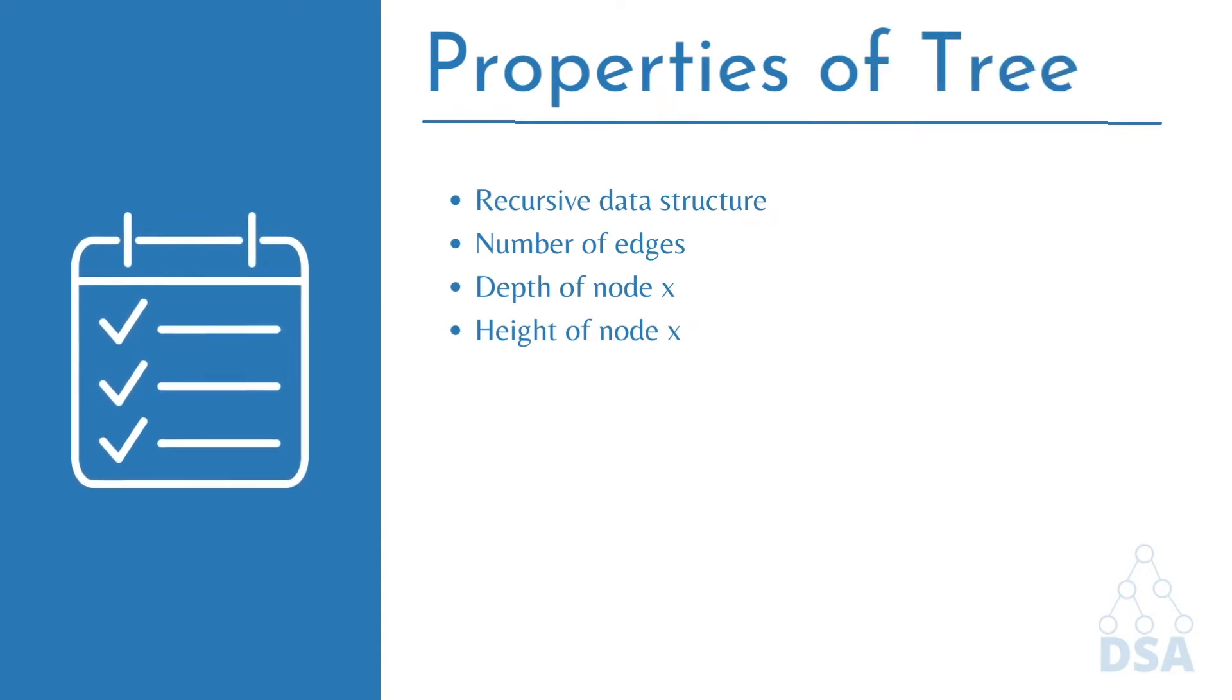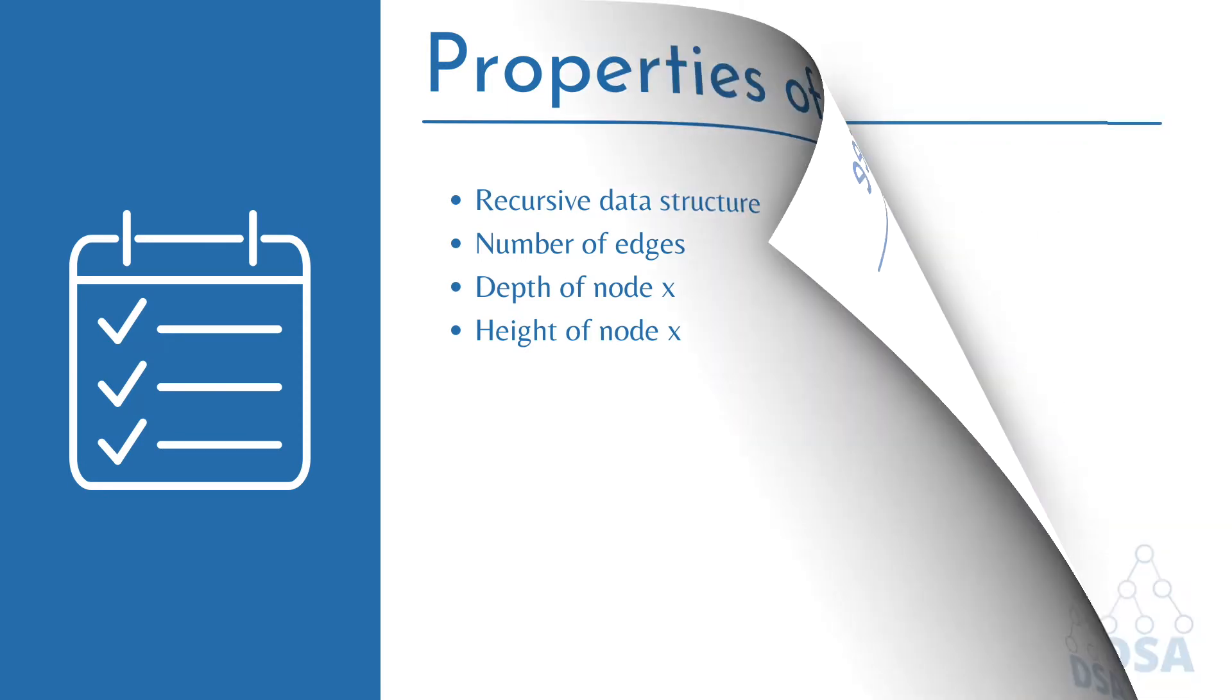The properties of tree data structure are: recursive data structure, number of edges, and depth and height of node x.